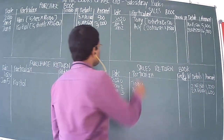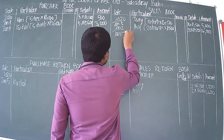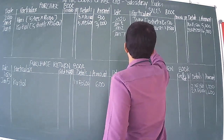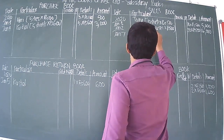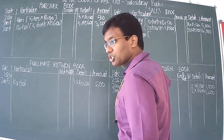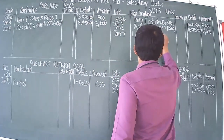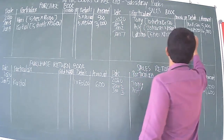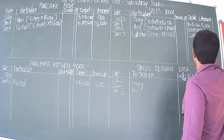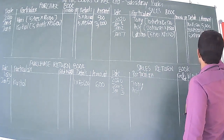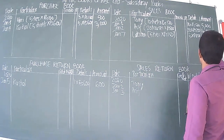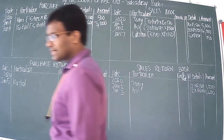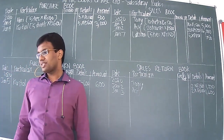Jan 7th: Lakshmi bought five ties at ₹150 each — this is a sale, so it goes in the sales subsidiary book. We write Lakshmi's name and details: 5 × ₹150 = ₹750.